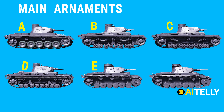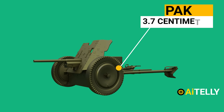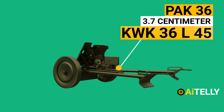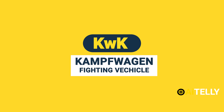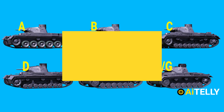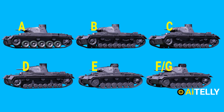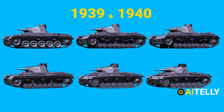Now let's look at the armament used in these variants. Ausf A through G were fitted with a 3.7 centimeter KwK 36 L/45 — KwK is an abbreviation for 'Kampfwagenkanone', meaning fighting vehicle cannon. This armament proved adequate during their battles in 1939 and 1940.